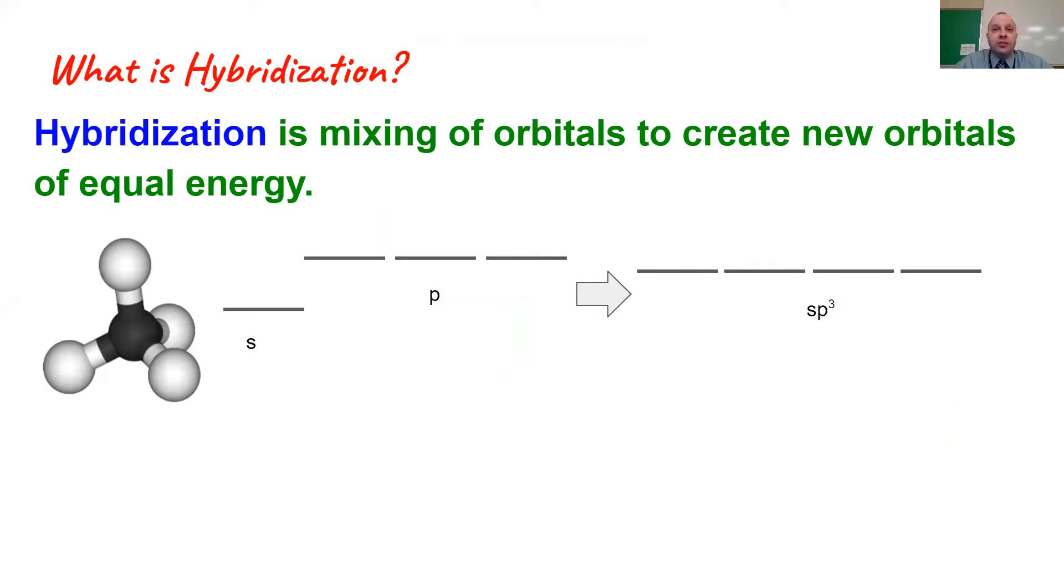the electrons when they overlap also fit into orbitals, but they don't fit into the traditional s and p orbitals that we associate with individual atoms. Instead, what happens is when atoms combine with other atoms, their orbitals change. They morph a little bit and form new equivalent orbitals based on the number of bonds that they're capable of making.